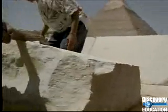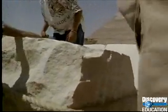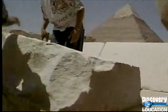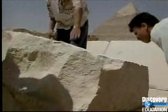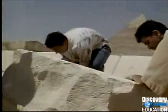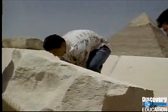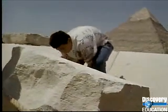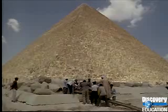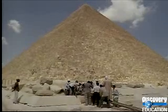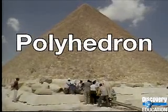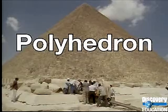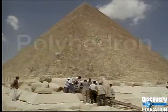Both the blocks and the pyramid are three-dimensional figures. That means they have points beyond or outside a single plane, so they take up three-dimensional space. Both the blocks and the pyramid are examples of a polyhedron — a three-dimensional object with polygons as faces.